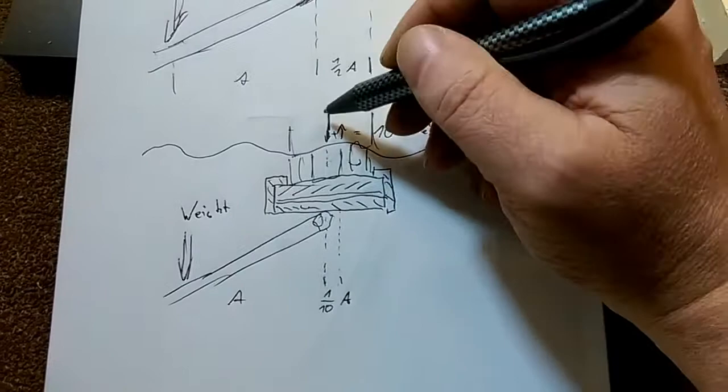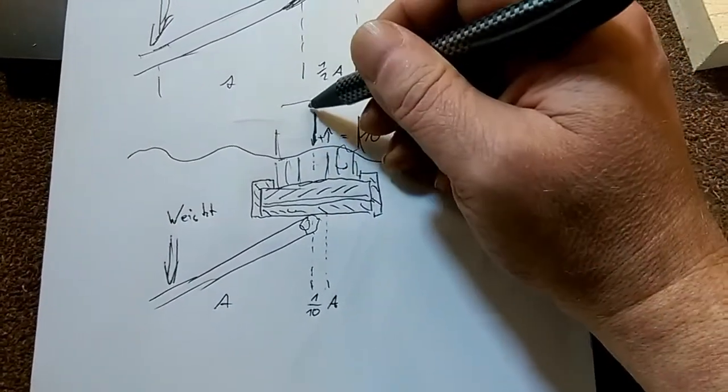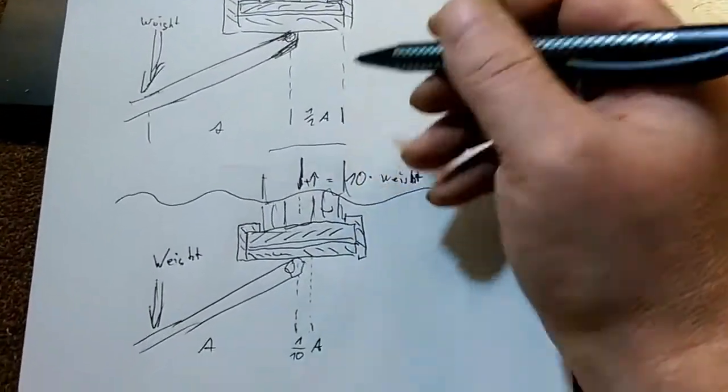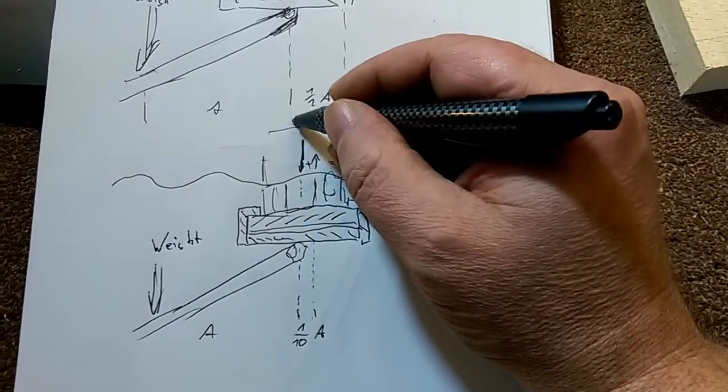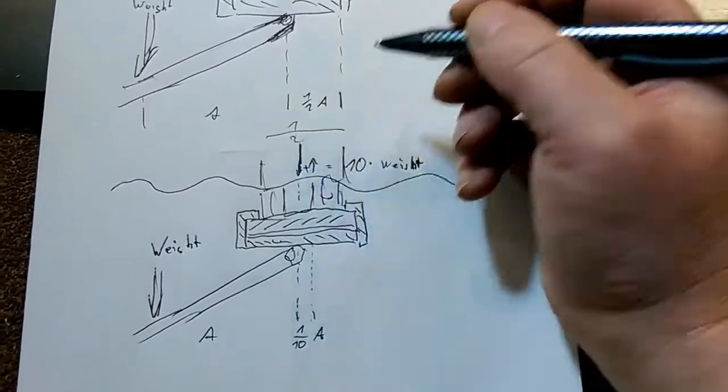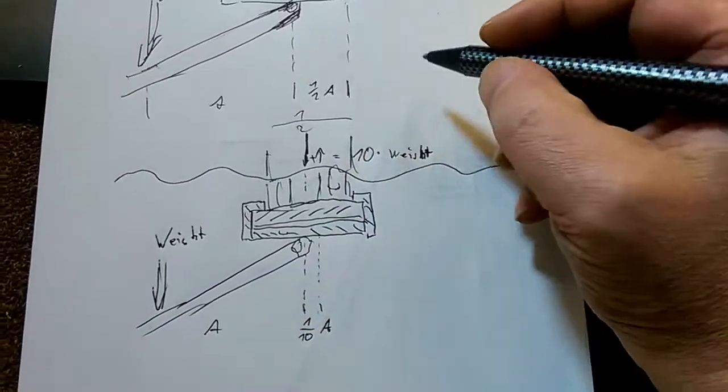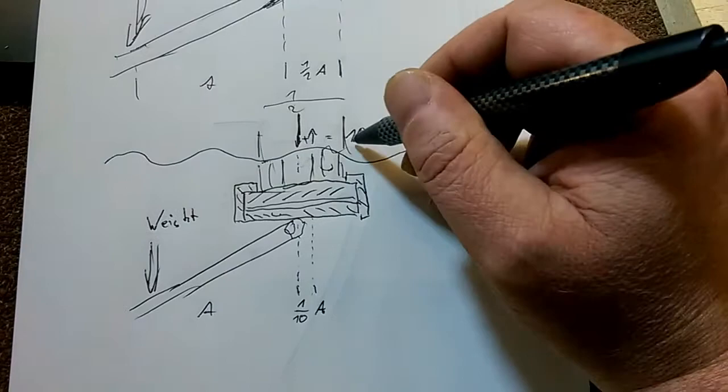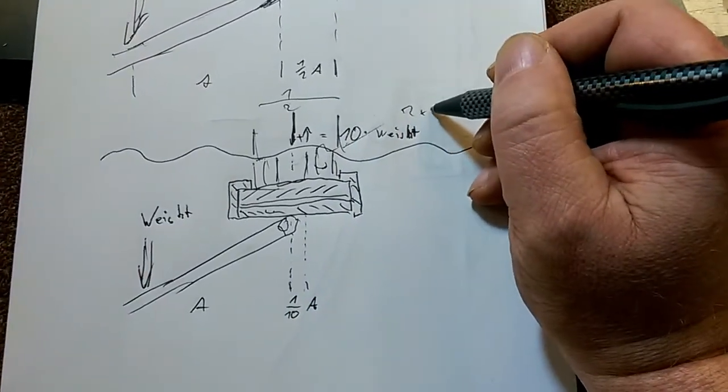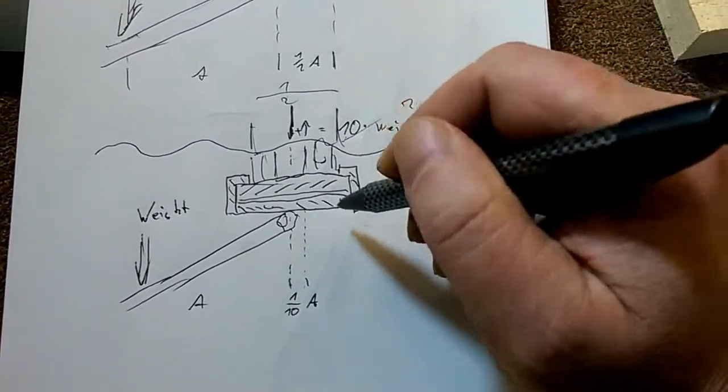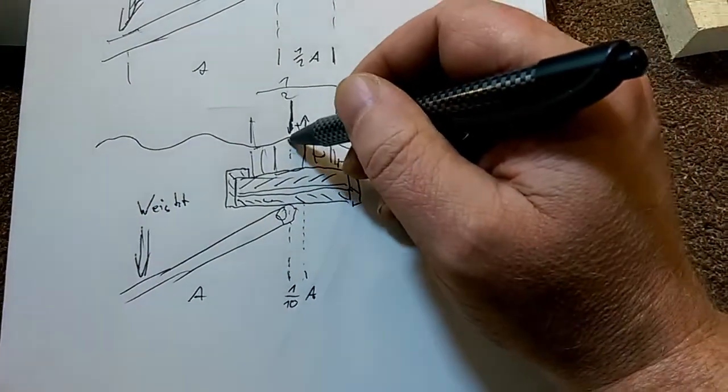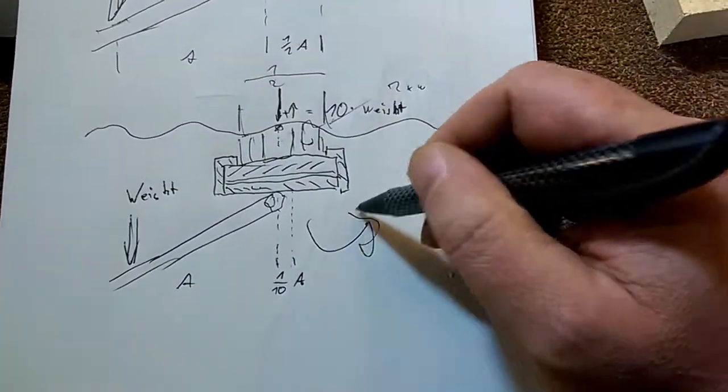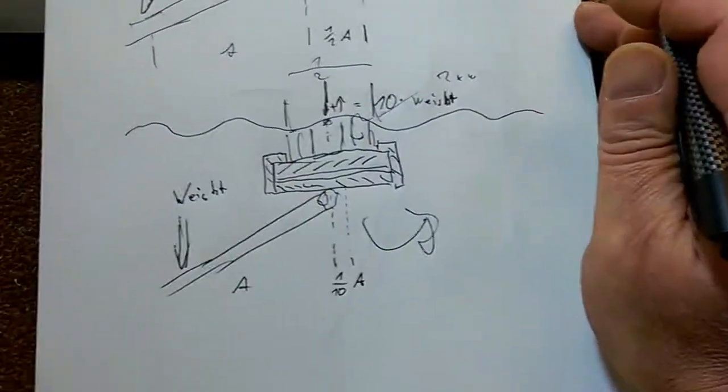When I use two, it doesn't matter whether this is bended or not. I end up with this direction here, which is, let's assume, a half. So this will be not ten times the weight but just two times the weight, and the force is going in a direction that's not that crucial.